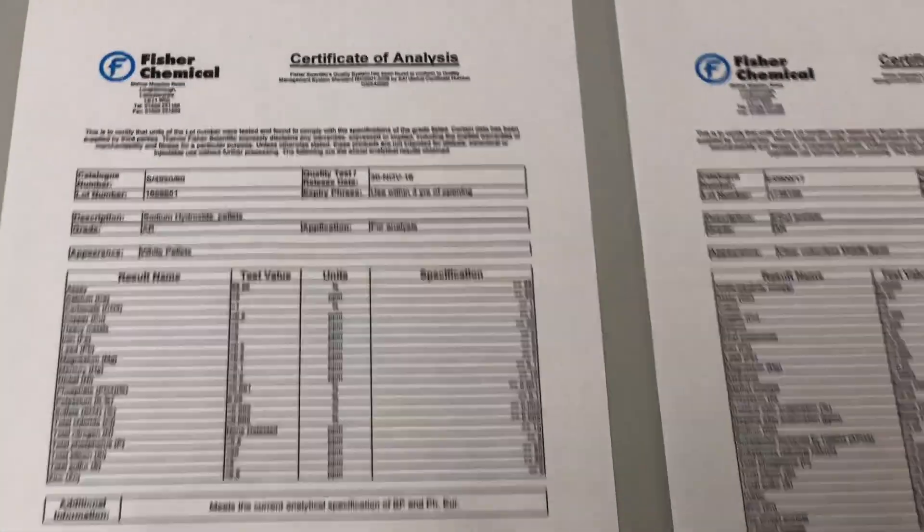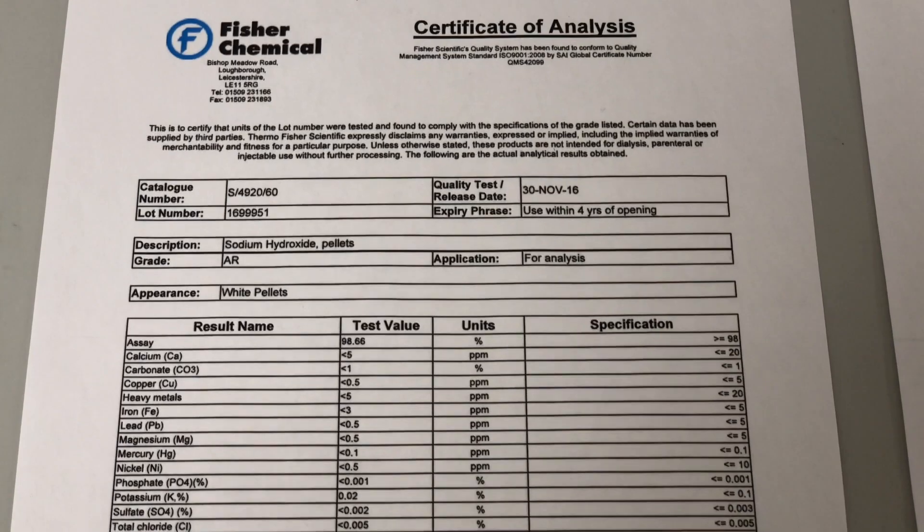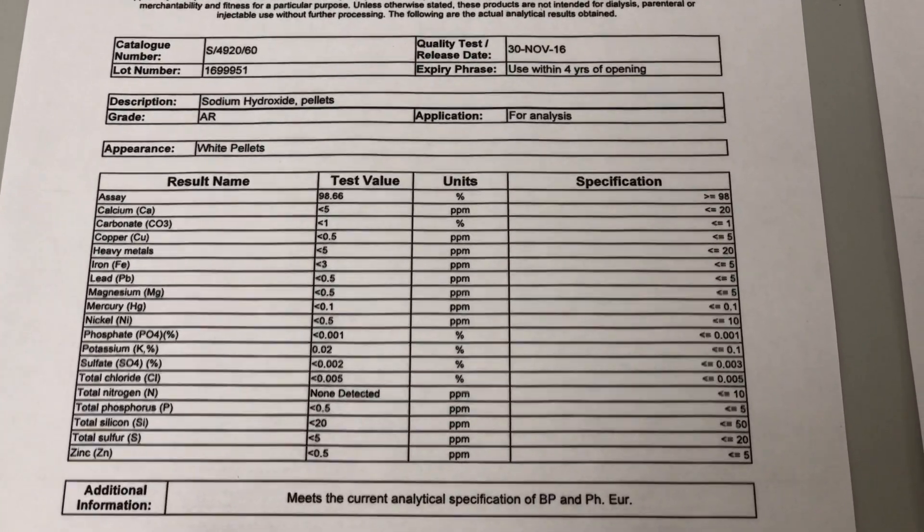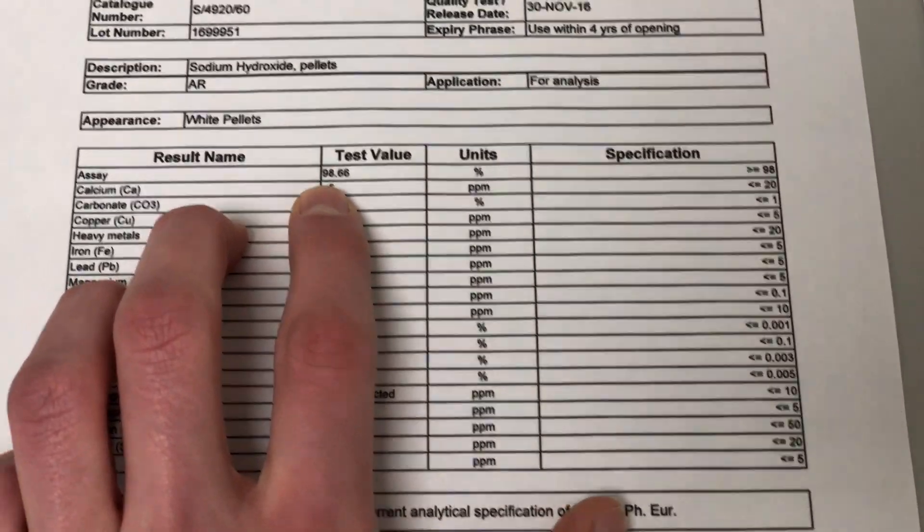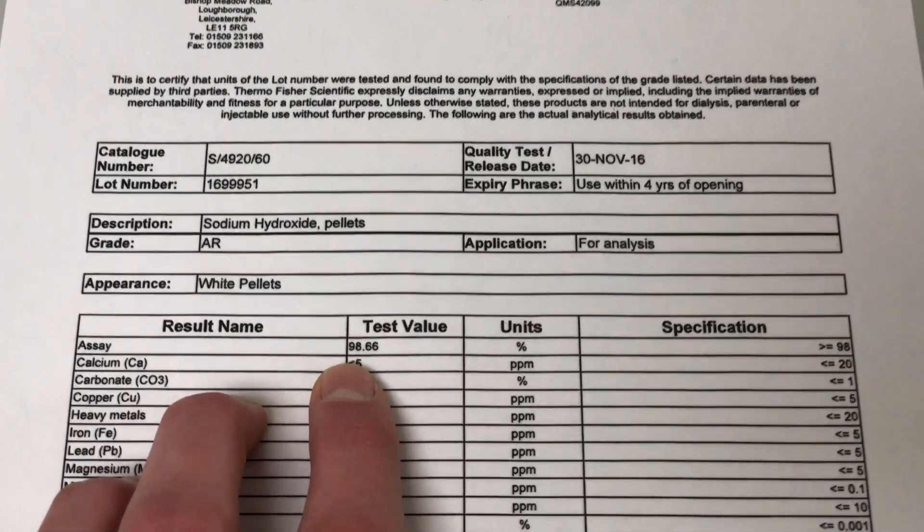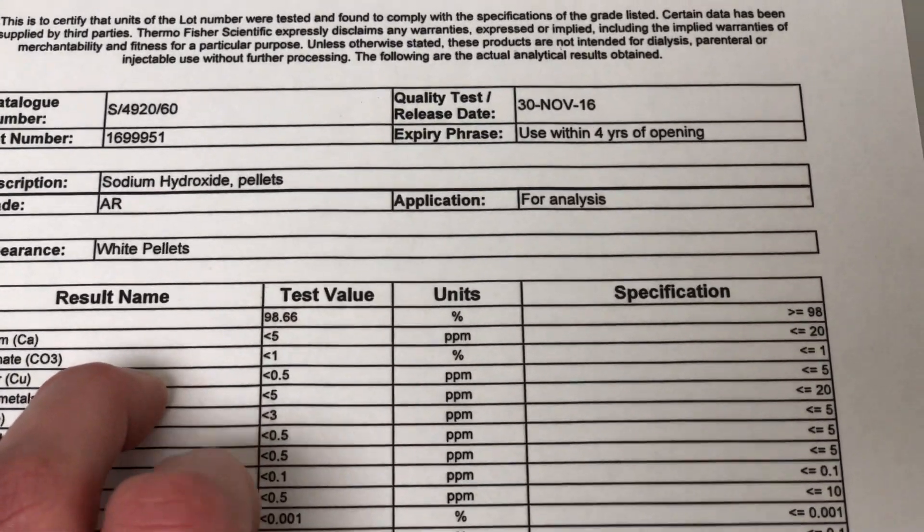So these here are the certificates from the suppliers. These can tell you things such as the concentration, impurities, and other factors. The most important one for you is the sodium hydroxide pellets, which is 98.66% pure.